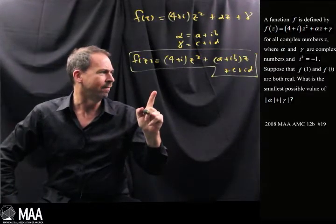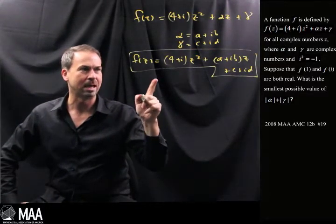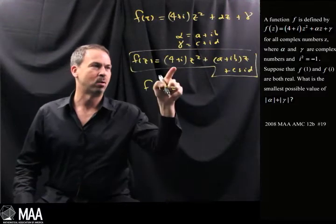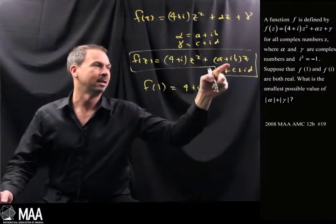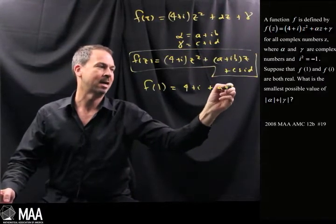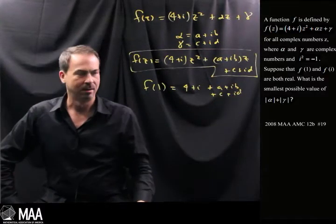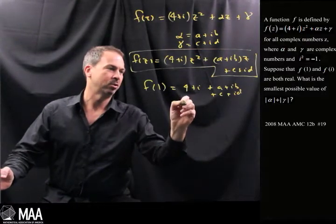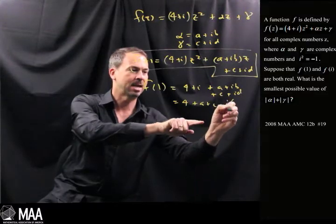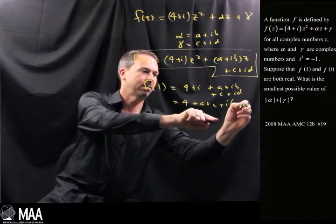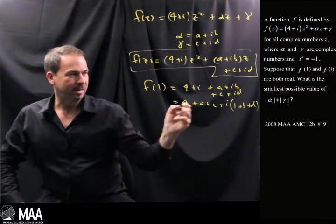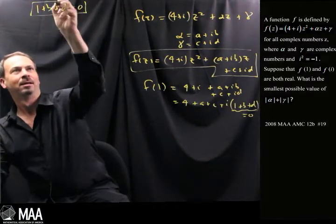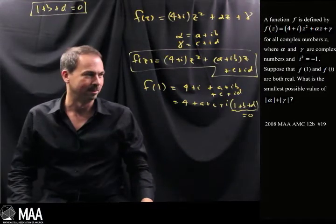It says that suppose f(1) and f(i) are both real. Well, I guess I can put in 1. So f(1), where z is 1, would be 4+i plus (a+ib) plus (c+id). That's f(1). But it says it's real. So it's got a real part, which is 4+a+c, plus i times 1+b+d. So if this is a real value, its imaginary part should be 0. So I guess I've just learned that we want 1+b+d = 0. I don't know what it does for us, but I feel like it's going to be important.